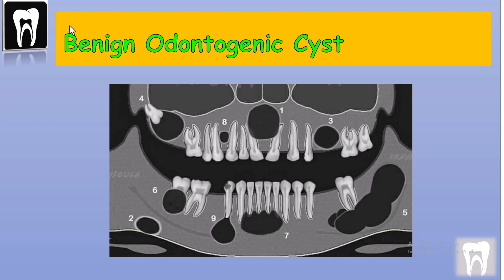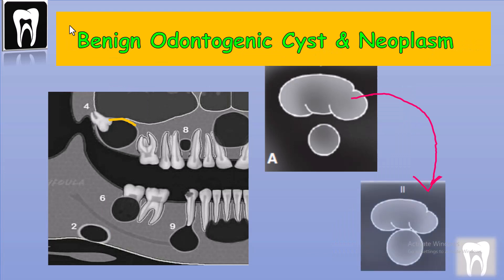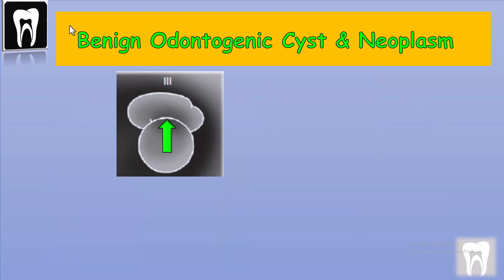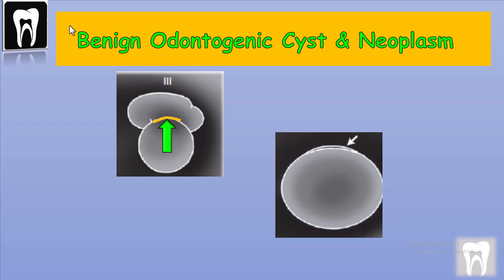Benign odontogenic cysts and neoplasms — as the name suggests, these lesions start inside the jaw. Radicular cysts and dentigerous cysts are common extrinsic lesions that can affect the maxillary sinus. As these lesions continue to grow, they reach the floor of the maxillary sinus, and as they continue to enlarge, they displace the floor of the maxillary sinus superiorly.